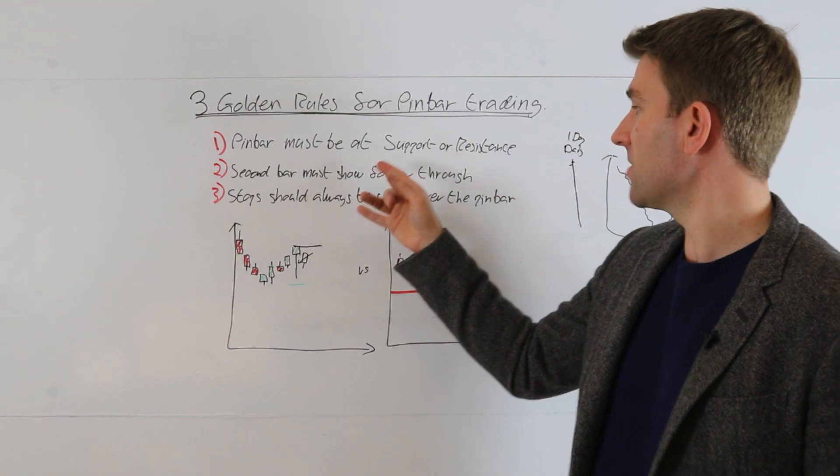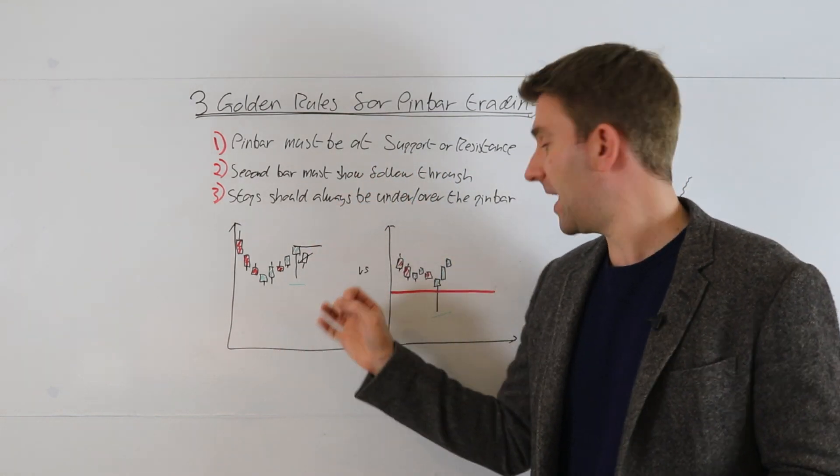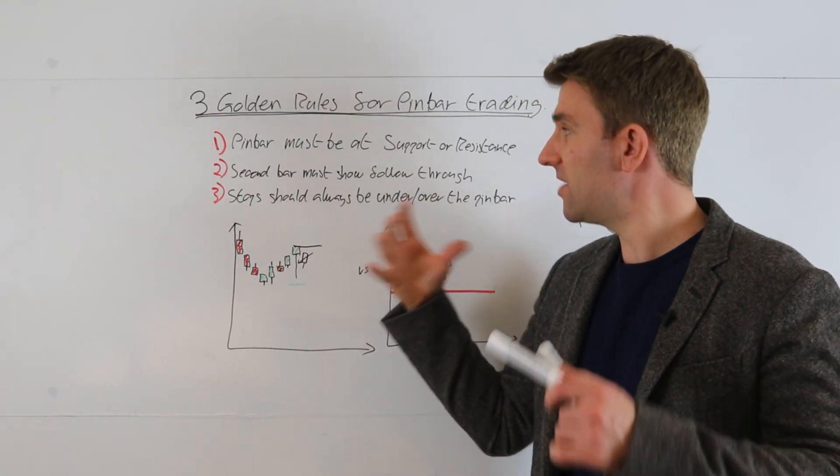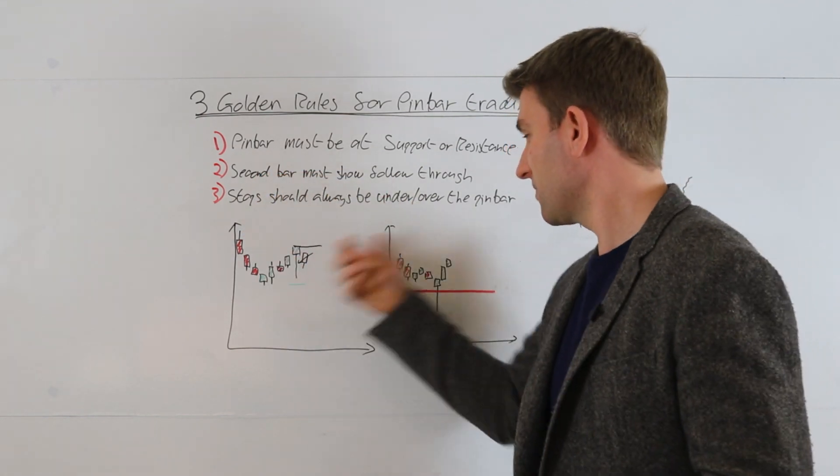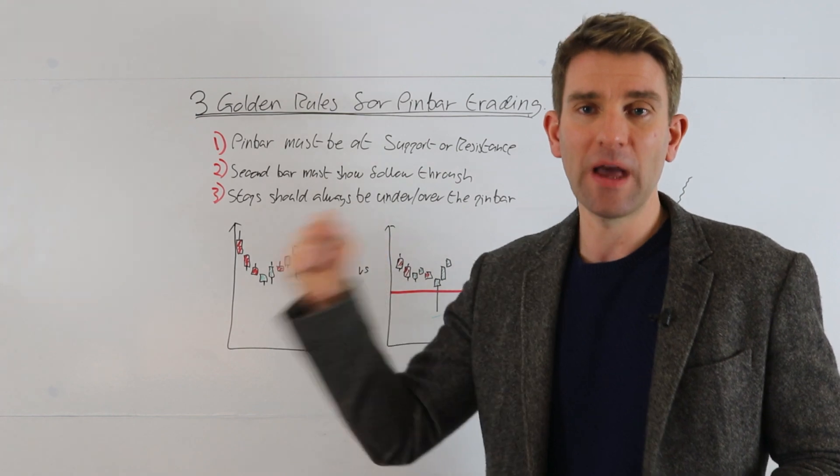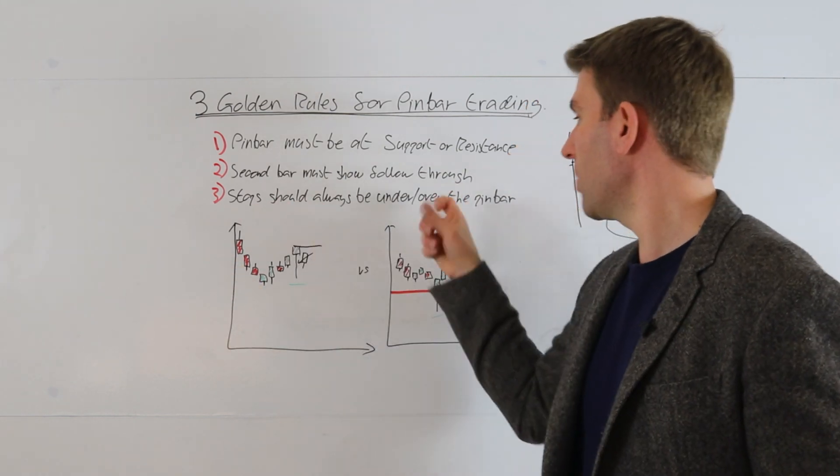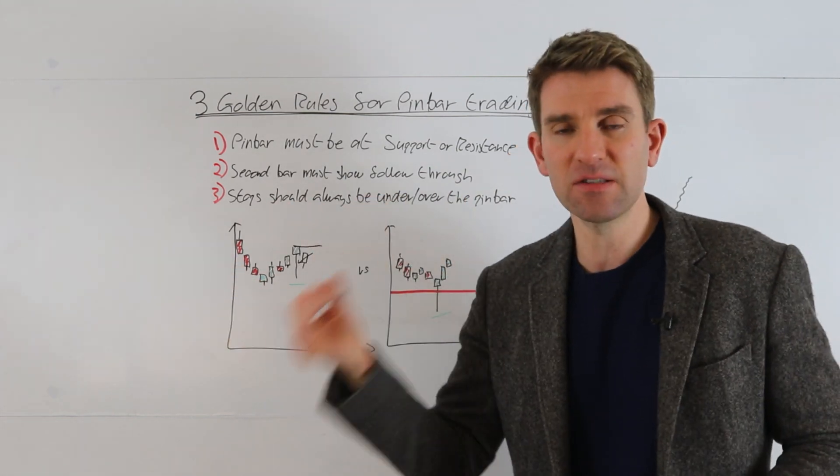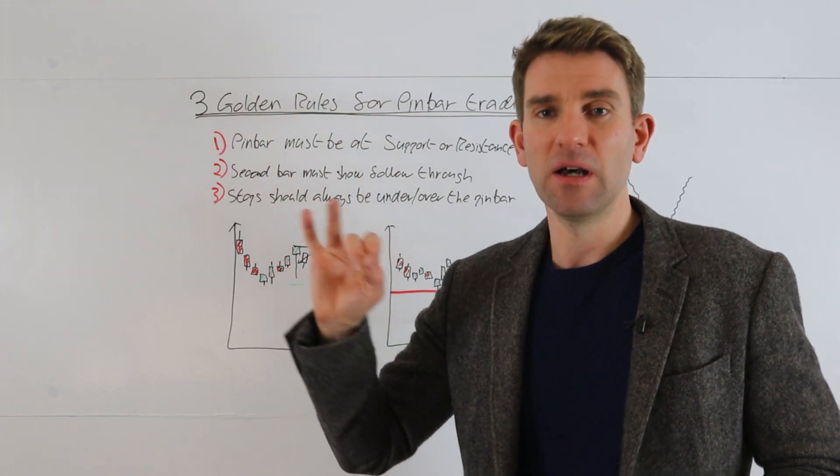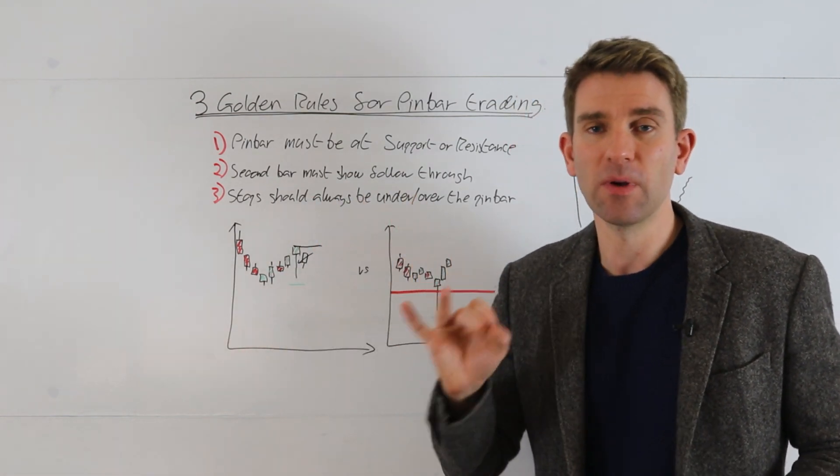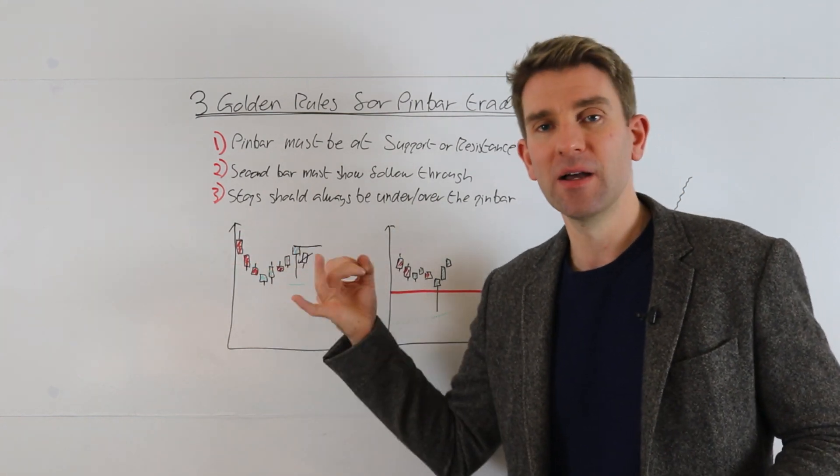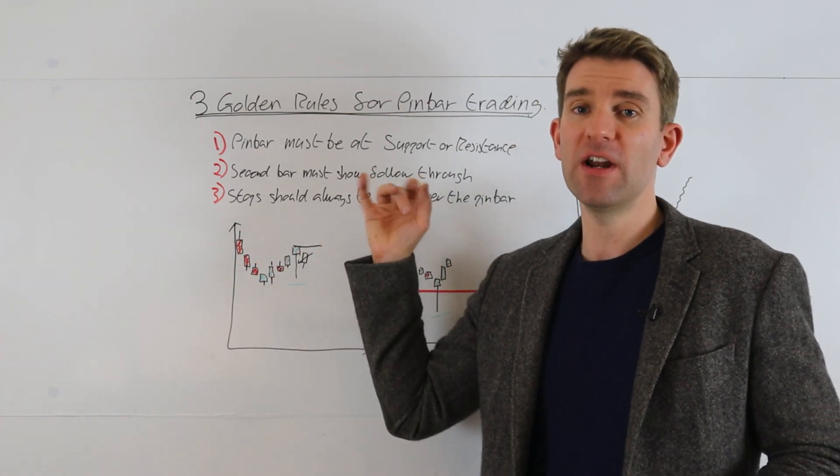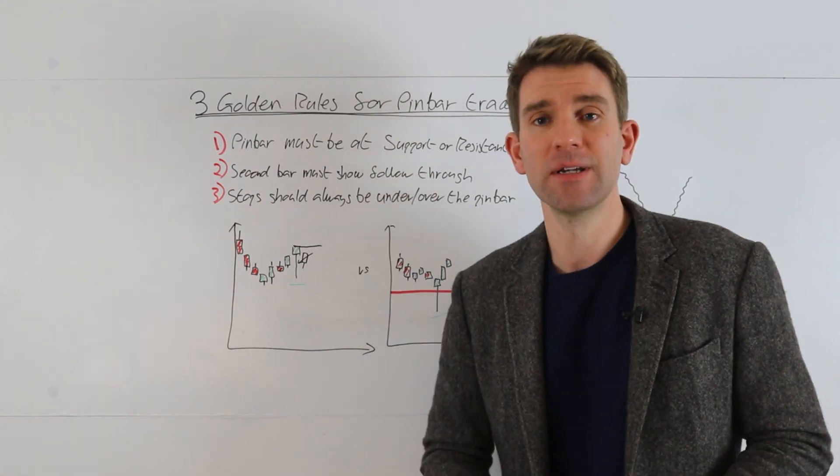So three things: pin bar must be at support or resistance for the ultimate power, maybe through a range or something like that. Second bar must show follow-through - again, ultimate power. So if we're long on that second day, immediate strength. And stops always under or over the pin bar. The thesis of the trade is that this has been an intraday reversal in the supply-demand imbalance, and so if that's the case we wouldn't want it to go back and touch that level. Good for trading, especially forex. Take care, see you next one. Bye.